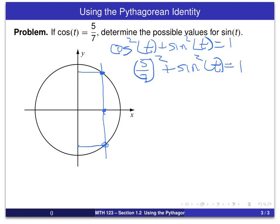So what we're going to do is square this. We get 25 over 49 plus sine squared of t equals 1.